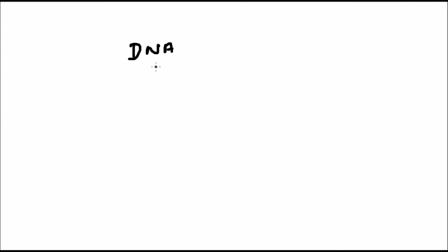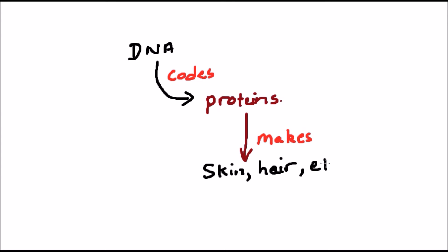What this code mostly specifies are proteins. Proteins are what make up our bodies, our hair, our skin, our muscle. But they also direct how these things are put together when we are born.